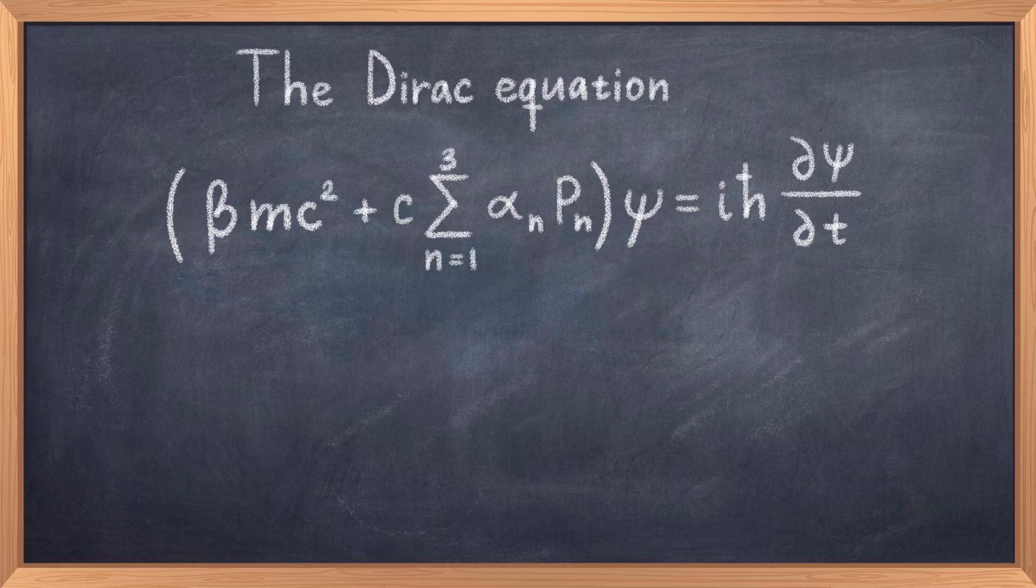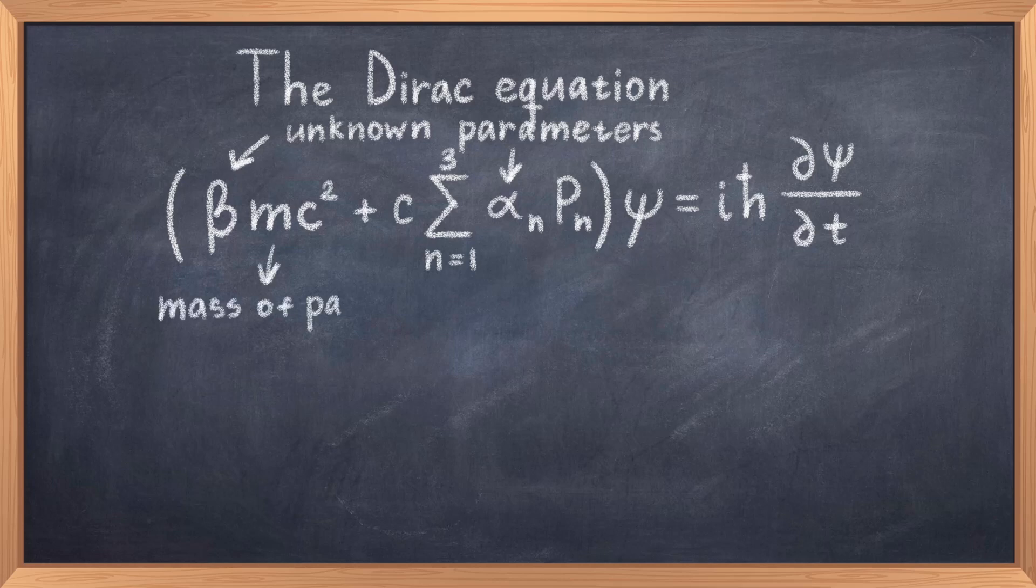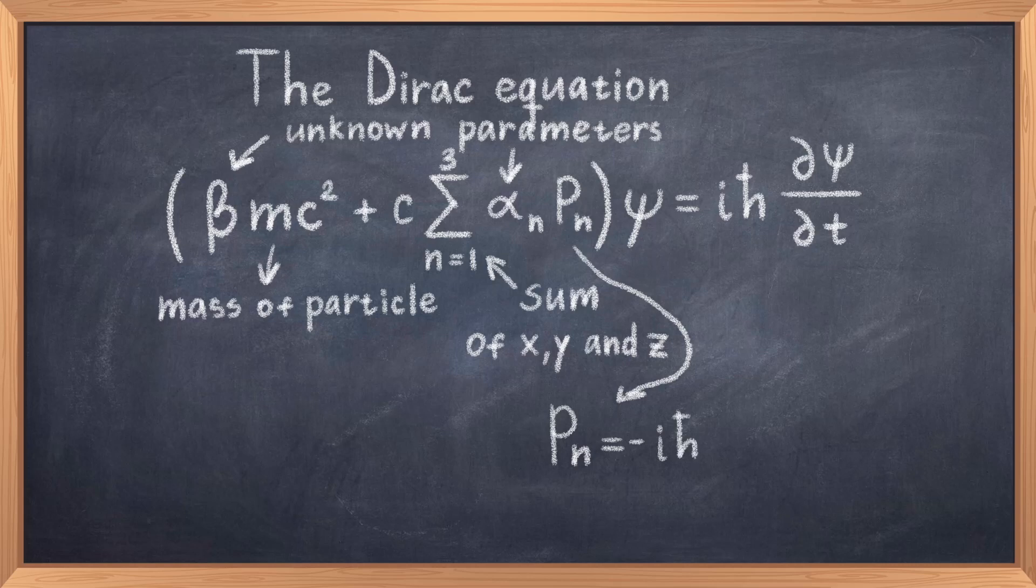Now we have some components, namely the two new parameters beta and alpha n, which we must somehow figure out. The first term has the mass term mc squared, just like in Einstein's famous equation e equals mc squared. So we have a mass term like in the Klein-Gordon equation. The next term is just the sum of the x, y and z component of the momentum operator. This is the first order derivative of the spatial component, just like we wanted. On the right hand side, it just looks like the Schrödinger equation and we have this first order derivative of the time component. Thus in this equation both space and time is first order. This is exactly what we need, a first order equation for spacetime.